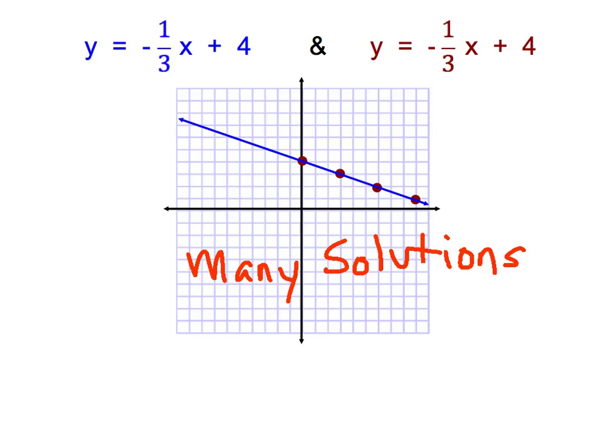As a wrap-up, the three things that can happen are: number one, the lines intersect and we get exactly one solution — the ordered pair where the lines cross, which happens most of the time. Second, the lines are parallel, they never intersect, and there's no solution. Third, the two equations are the exact same line, which means there are many, many solutions to that system. Alright, guys, have a great day.